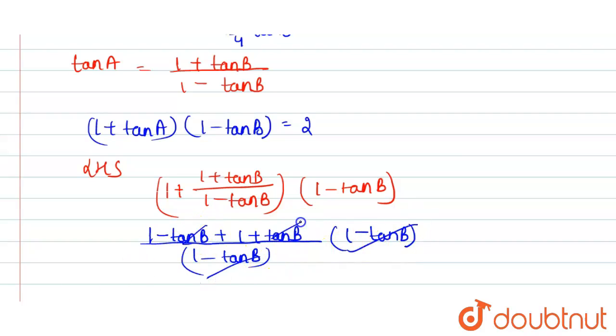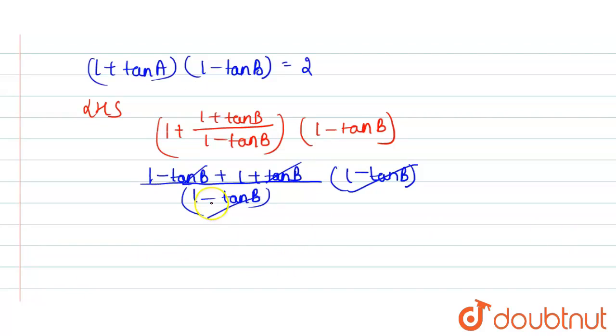So this cancels out with this, and minus tan B plus tan B cancel. So here 1 plus 1 is equal to 2, and this is equal to the right hand side. So this is equal to right hand side.